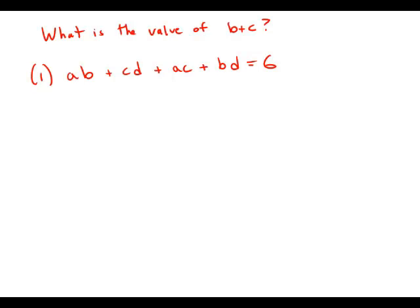What is the value of B plus C? Statement 1 tells us that AB plus CD plus AC plus BD equals 6.